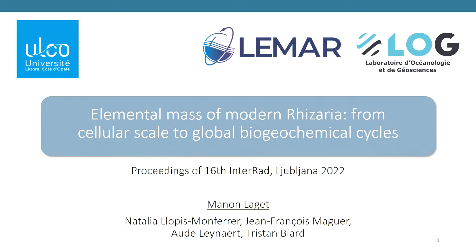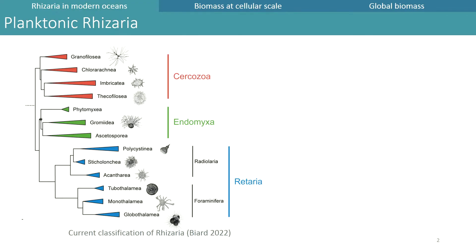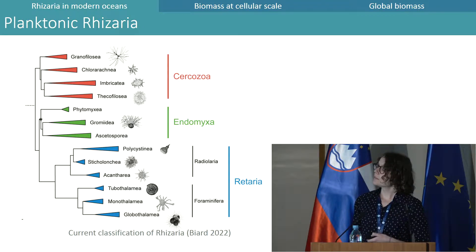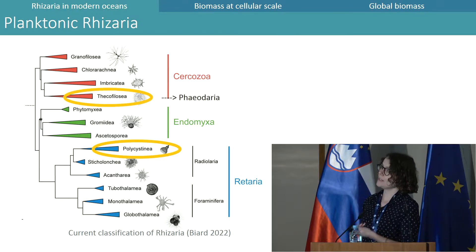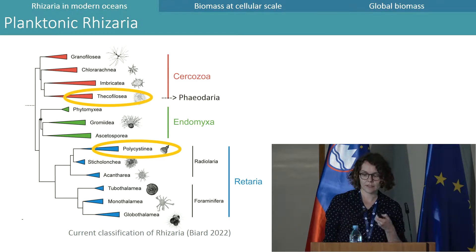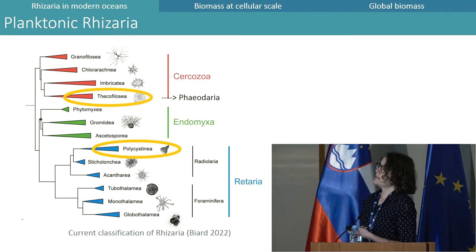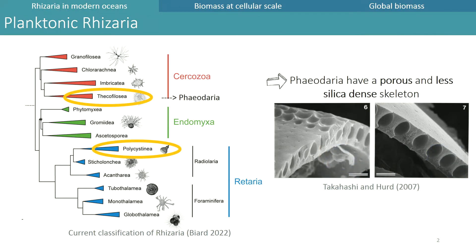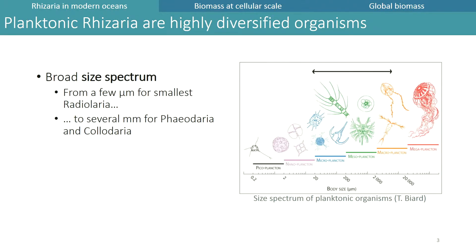First, to put a bit of context, I will focus mainly on two groups of planktonic Rhizaria: Radiolaria Polycystinia and Phaeodaria. Phaeodaria were first classified within Radiolaria but were moved within Sarkozoa on the basis of DNA analysis. Most species from these groups can produce silica skeletons, but there is an important difference in skeletal structure, which is more porous and less silica-dense for Phaeodaria than for Radiolaria.